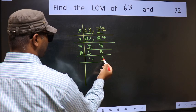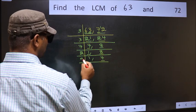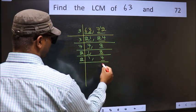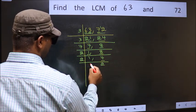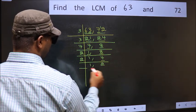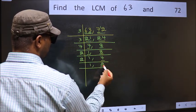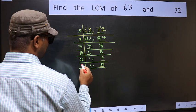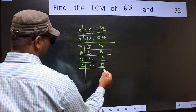Now we have 4. 2 times 2 is 4. Now we have 2, which is a prime number. 2 times 1 is 2.